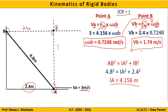The solution follows a simple, repeatable five-step procedure for any kinematics of rigid bodies problem. Step 1: locate the ICR. Step 2: write the points on the body. Step 3: write the velocity formulas. Step 4: find all required lengths. Step 5: substitute and get the answer. This exact procedure will be followed uniformly for all problems of kinematics of rigid bodies, regardless of the type of problem you encounter.